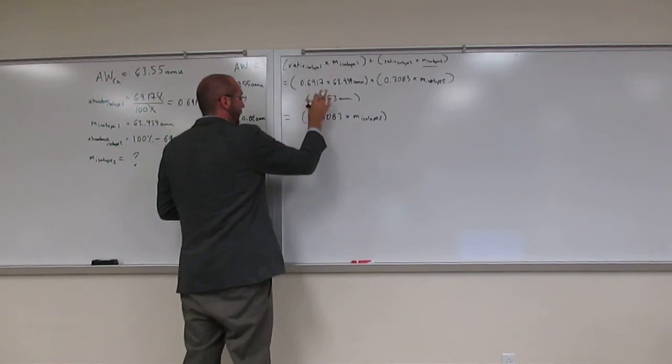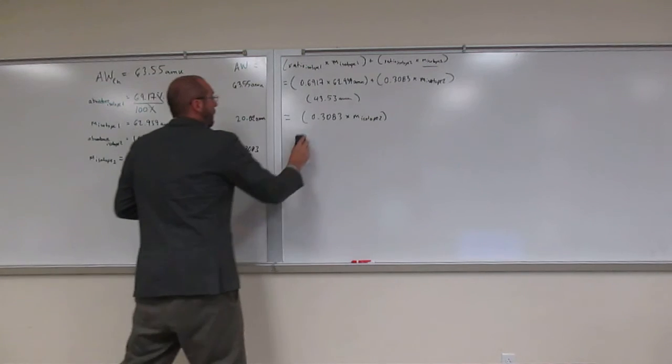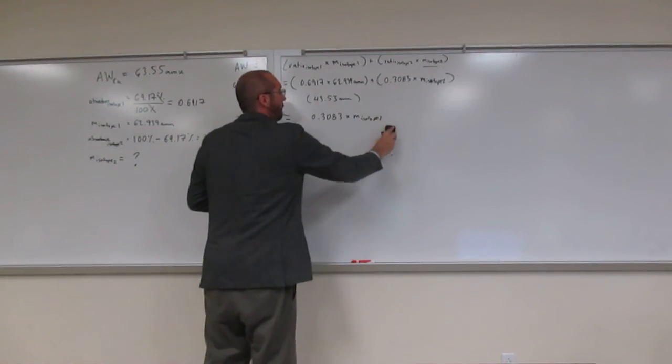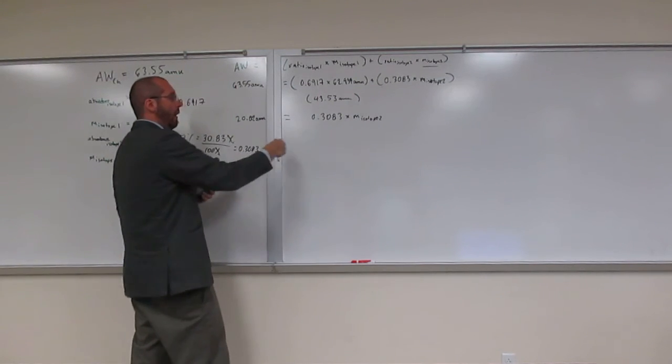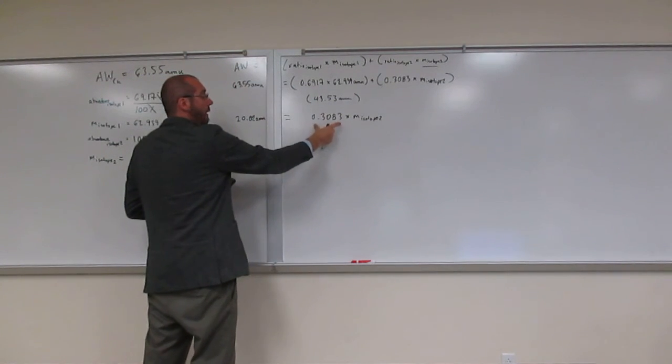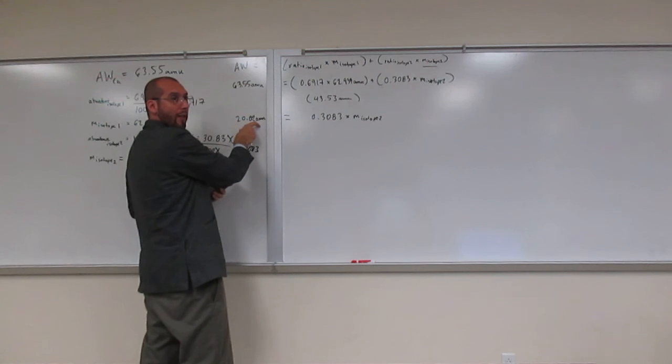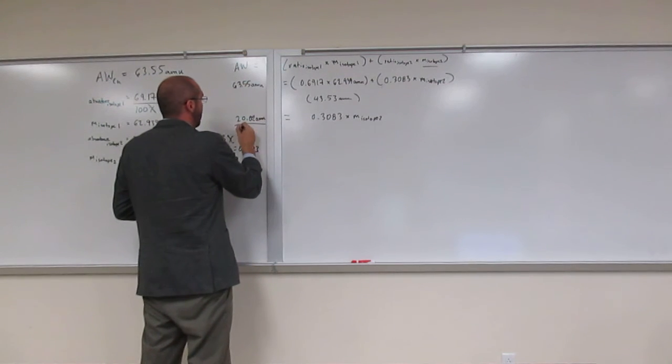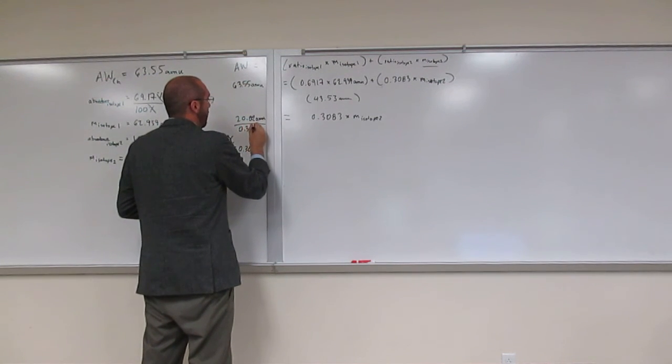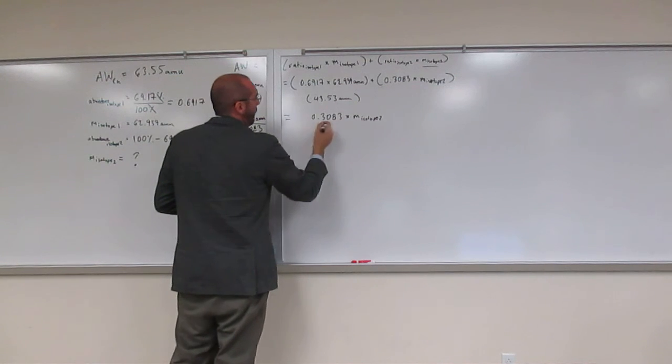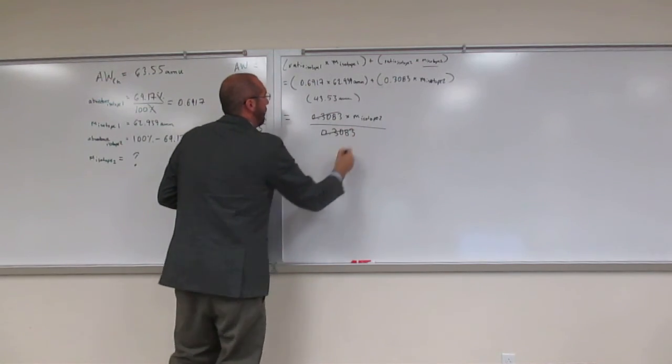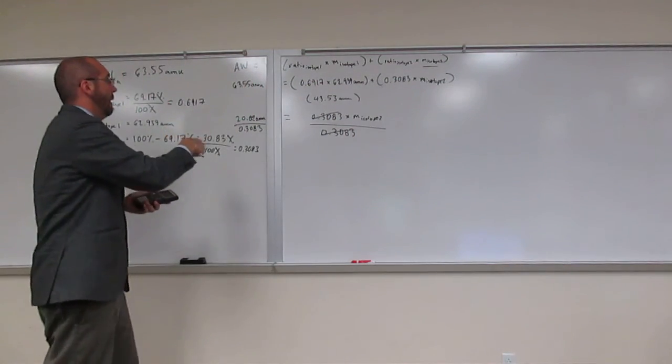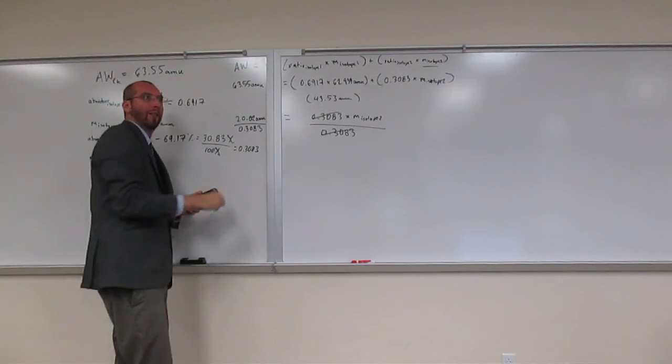And then I still have this equal to 0.3083 times mass of isotope 2. But at this point, I could just be like, I don't need these parentheses anymore. So this times this, well, if I want to get rid of this, I'm going to divide both sides by, right? So now I'm going to just say 0.3083. And then, of course, if I do the same here, that just gets rid of it.